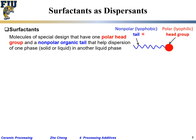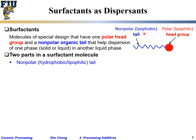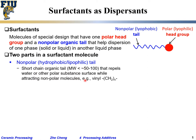Most of these tails are organic and most are non-polar, which means lipophilic or hydrophobic. The non-polar or lipophilic tail — lipo means oil, philic means likes — so it is hydrophobic. These types of tails do not like water; they hate water but they like oil. Typically they are relatively short chain tails that repel water and other polar substances and attract non-polar solvents or molecules, such as vinyl groups.